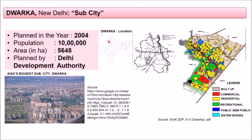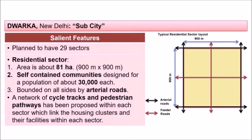You can see in this image the development of Dwarka and its location in the southwest part of Delhi. The plan had 29 sectors, and a typical residential sector layout was approximately 900 by 900 meters, with an area of about 81 hectares.